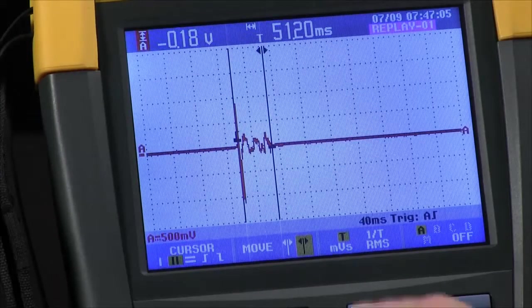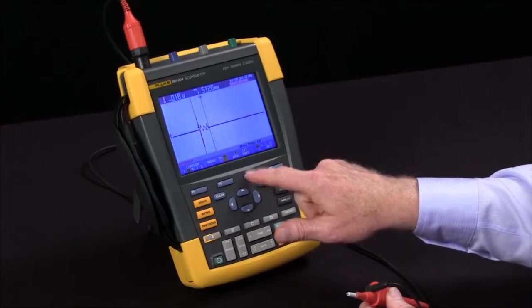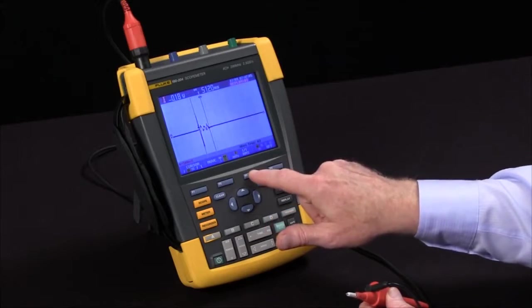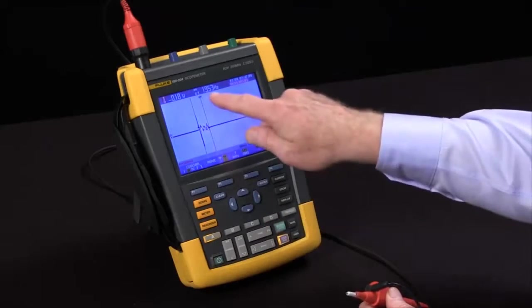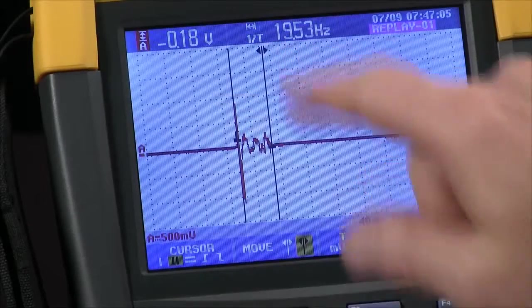If I wanted to know the frequency I could press the F3 key to toggle from time to one over time and actually see the frequency at 19.53 hertz.